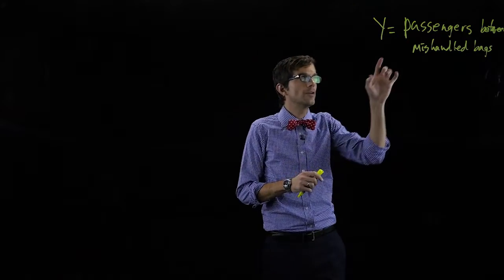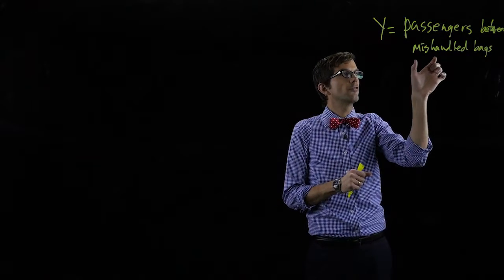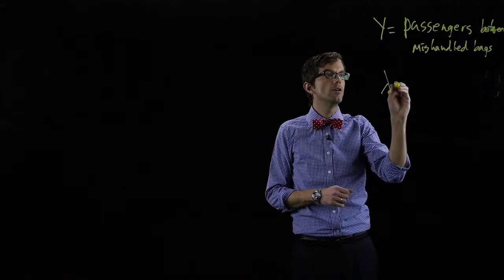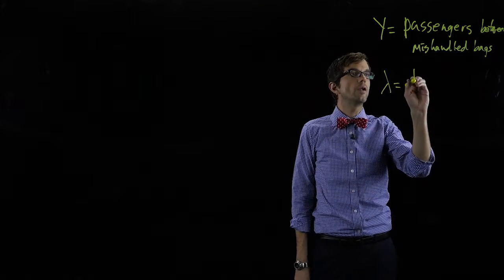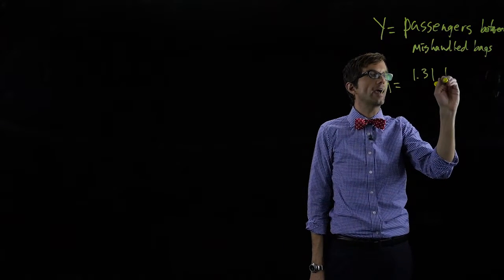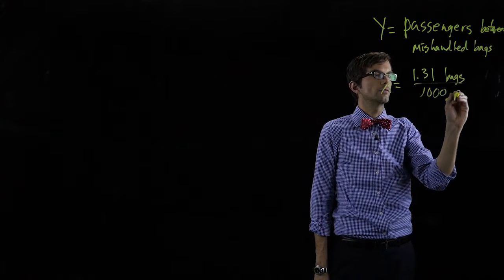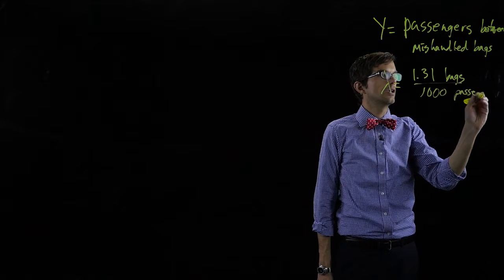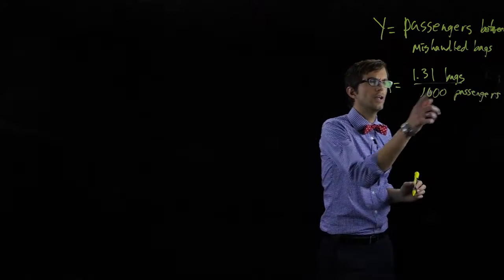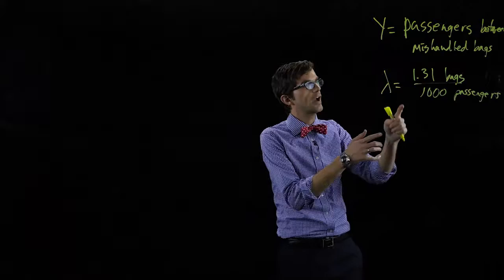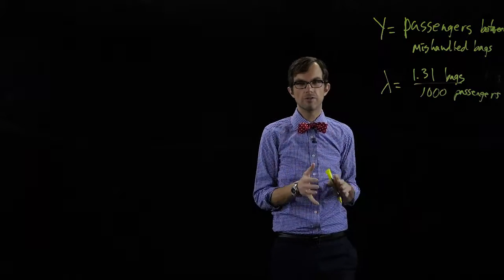Naturally we can't have 2.7 passengers, but relative to the number of bags this interval is going to be pretty large. In fact, lambda is 1.31 mishandled bags per 1,000 passengers. So let's just assume that we can describe passengers on a continuous number line and describe passengers with an exponential distribution.